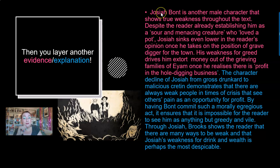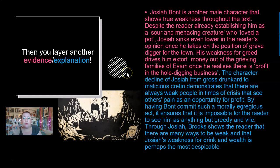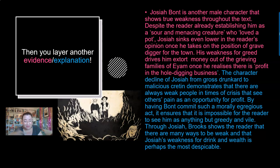So now I'm going to talk about Josiah, who — God help the man — he is weak if nobody is. Josiah is another male character that shows true weakness throughout the text. Despite the reader already establishing him as a 'sour, menacing creature' — there I am embedding quotes again — 'who loved a pot.' Josiah sinks even lower in the reader's opinion once he takes on the position of grave digger for the town. His weakness for greed drives him to extort money out of the grieving families of Eam once he realizes there is profit in the whole digging business. My quotes are super relevant — you must pick relevant quotes. If you give loads of quotes but they're not relevant, you're not going to get points for them.